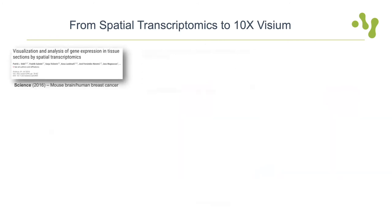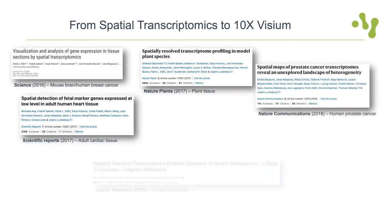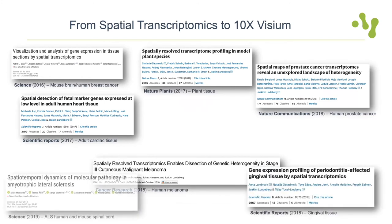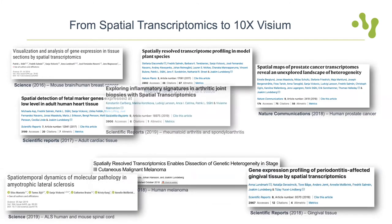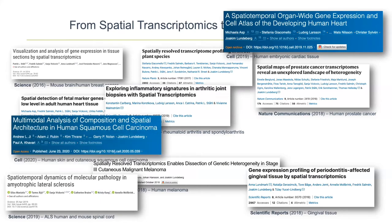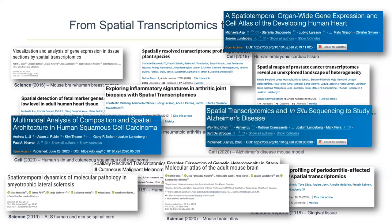After the first Science publication, many papers followed applying the method to several species and a number of different organs — including human and mouse brain, heart, spinal cord, intestine, breast and prostate tumor, rheumatoid arthritis, melanoma, pancreas, and much more.